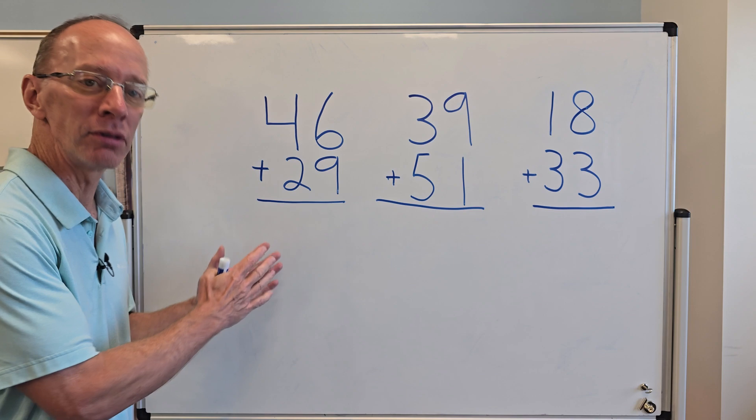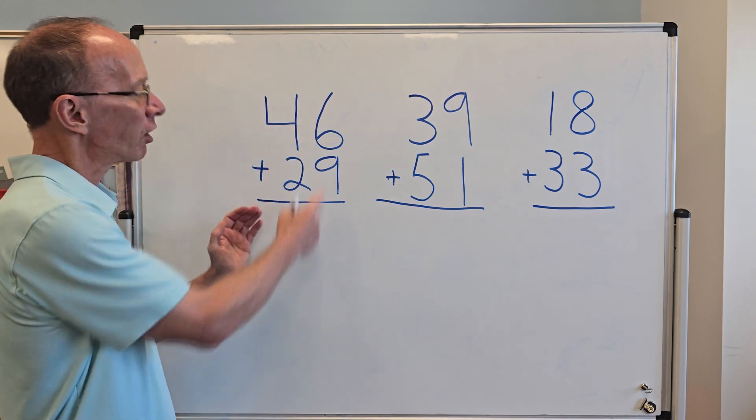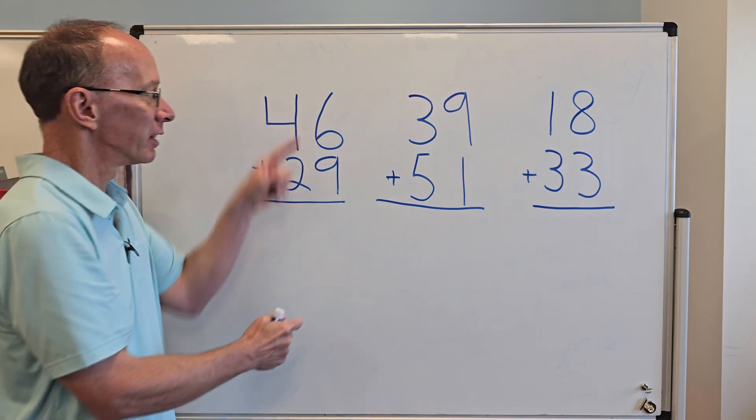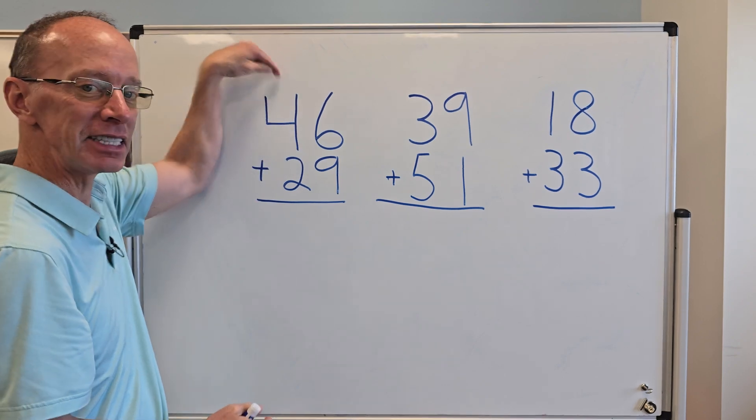When we do double digit addition, we're always starting with the ones place right here. This is the ones place. This is the tens place.